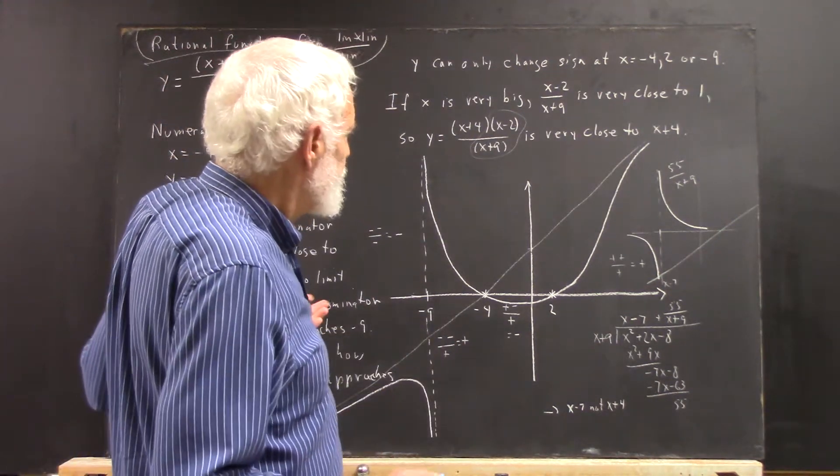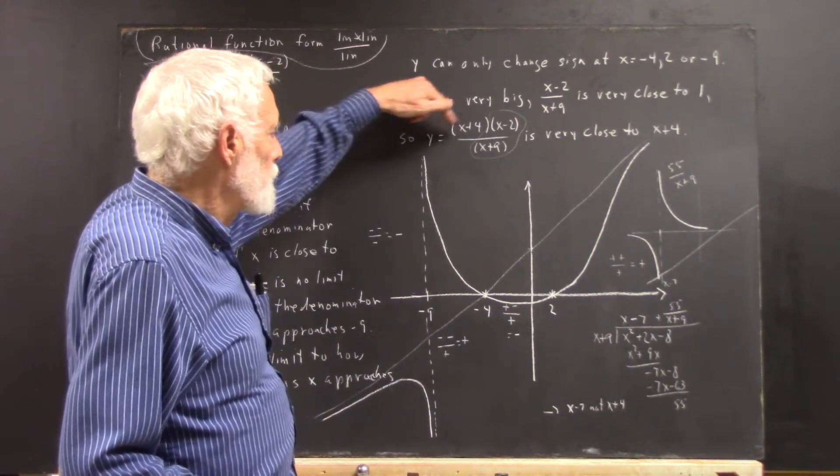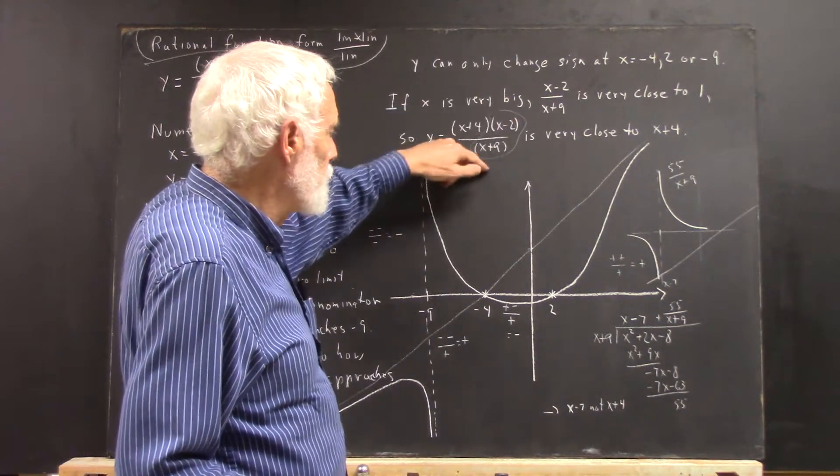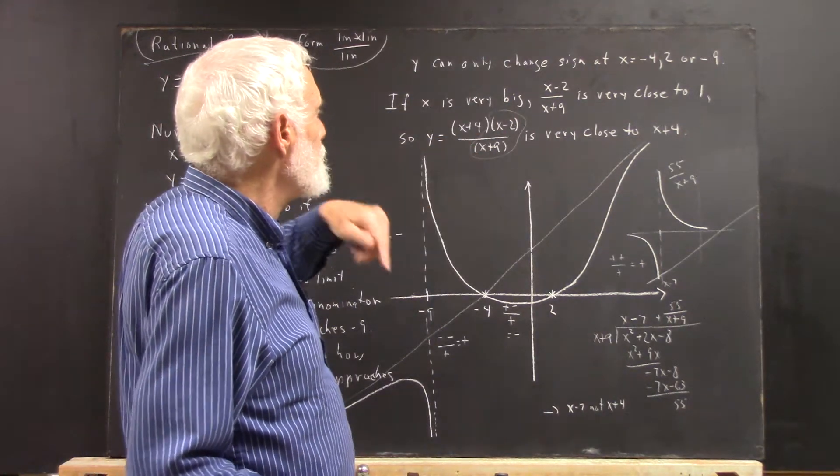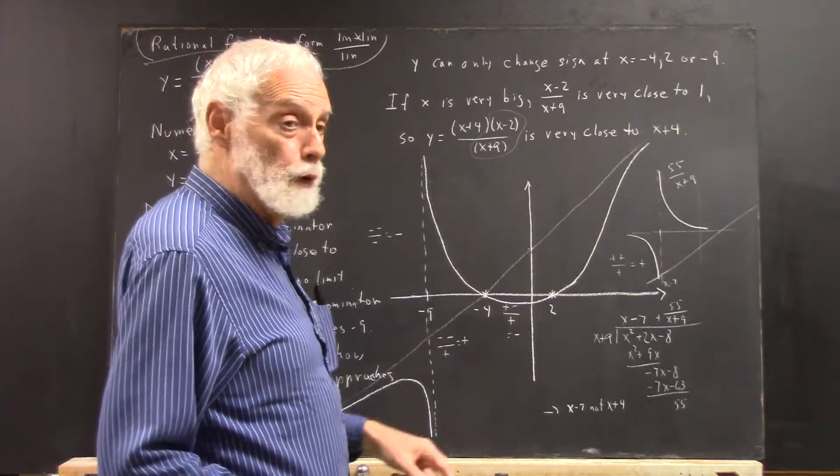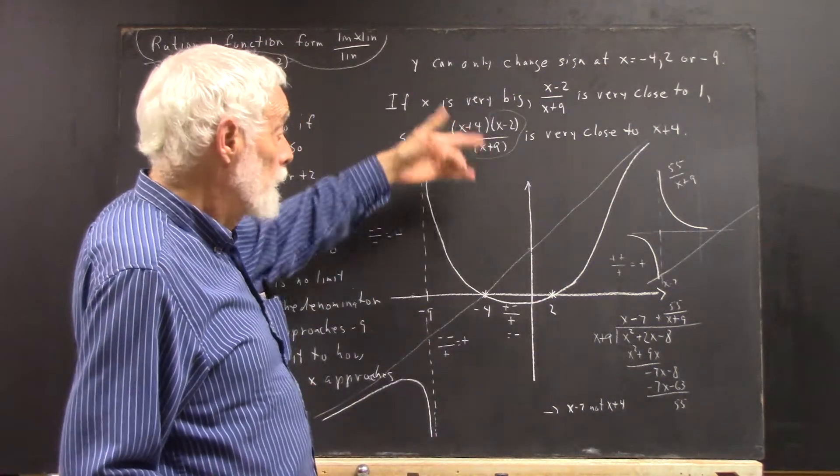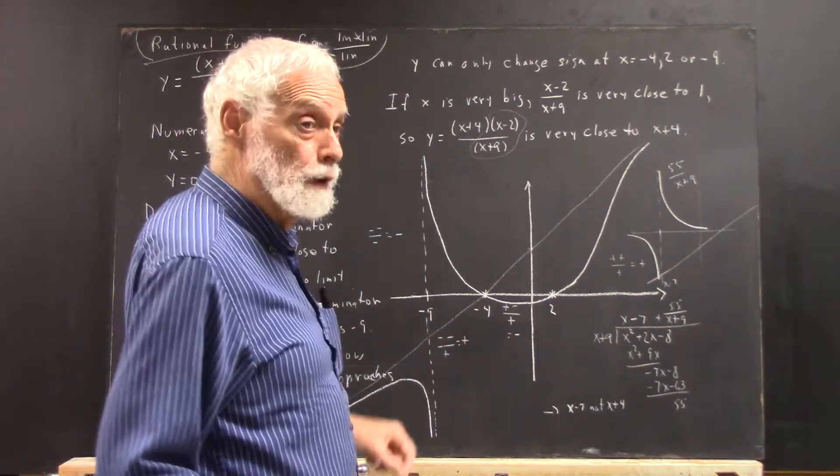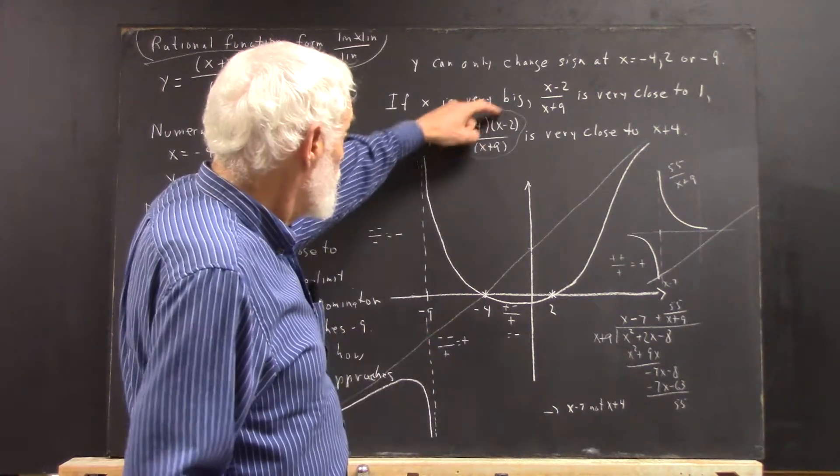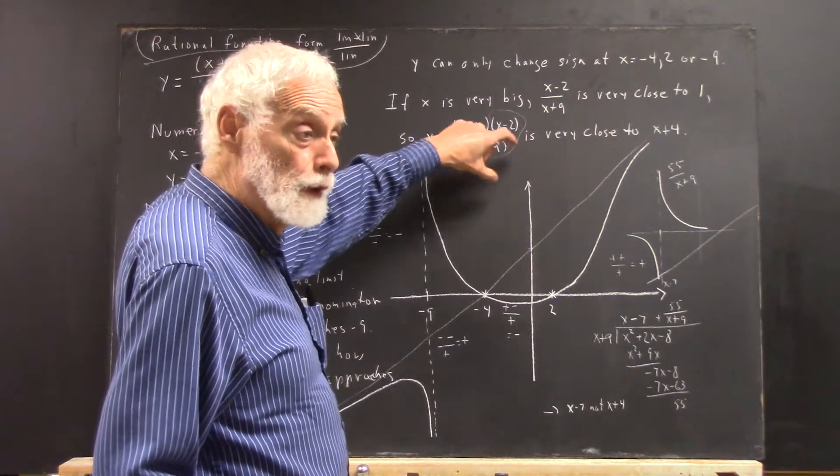I said that y equals (x+4)(x-2)/(x+9) is very close to x+4, and that's true. It is very close to x+4 if x is very large, because (x-2)/(x+9) is very close to 1.